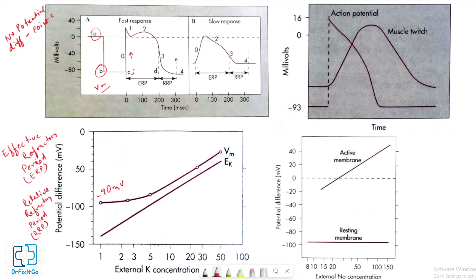During depolarization, the potential difference is actually reversed, such that the potential of the interior of the cell exceeds that of the exterior by about 20 millivolts. The rapid upstroke of the action potential is designated as phase 0.